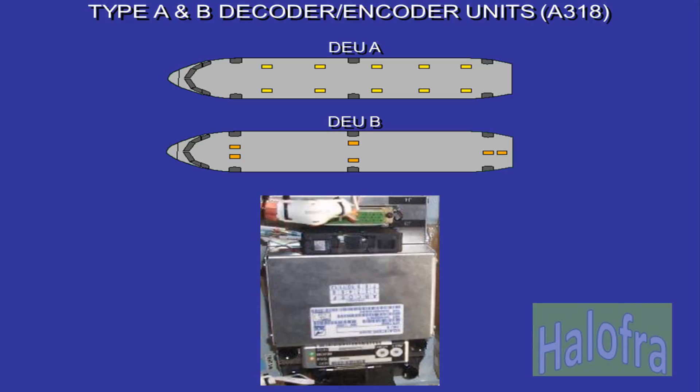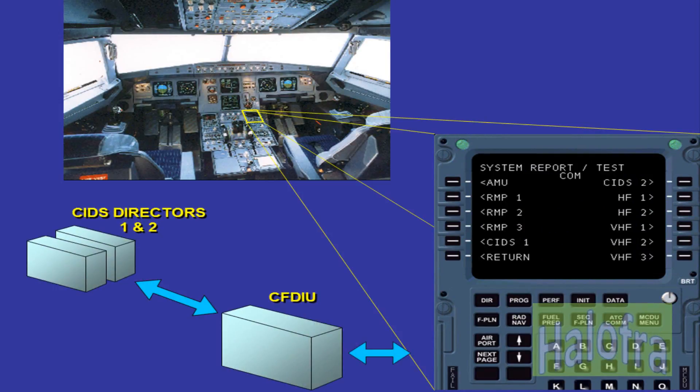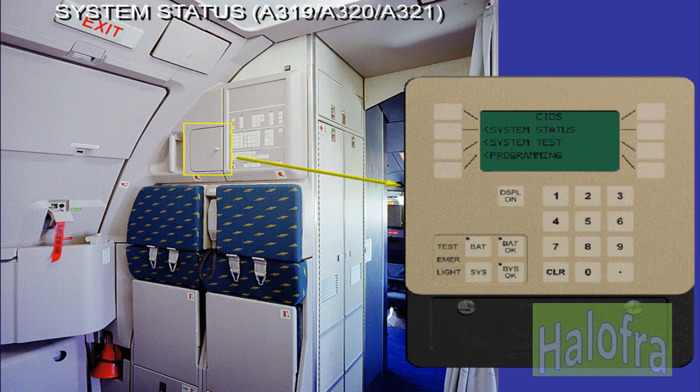The number of type A DEUs is also reduced. Using the Multipurpose Control and Display Unit, MCDU, you can have access to maintenance failure information on the cabin system through the CFDIU and CIDS Directors 1 and 2. The system status function gives information on the CIDS and all connected cabin systems.